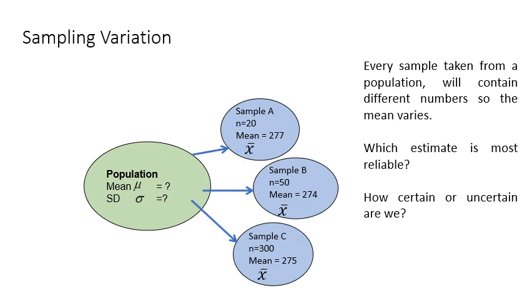You also have to consider sampling variation. Every sample taken from a population will contain different numbers, so the mean varies. For normally distributed data, the reliable estimate is the mean and standard deviation. But if the data is non-normal, the reliable estimate is the median and IQR. To be confident on our sampling distribution, we also construct confidence intervals.